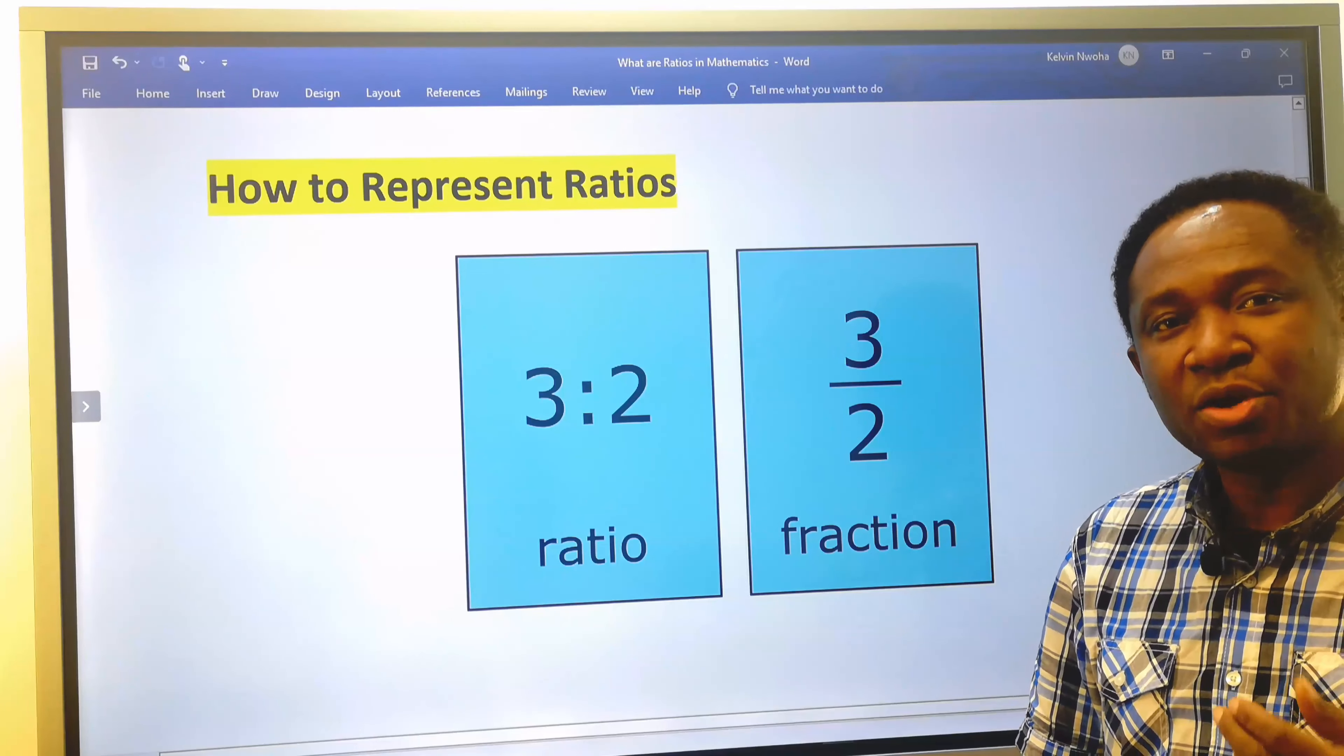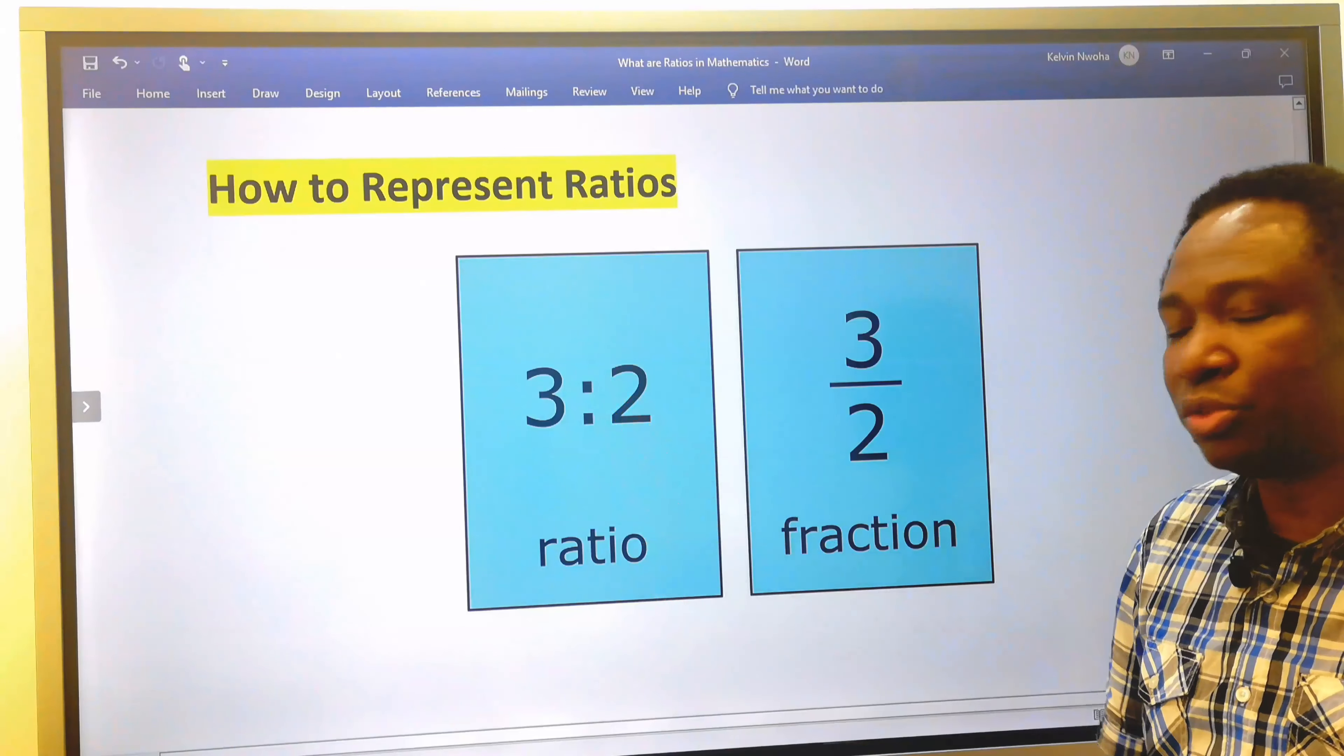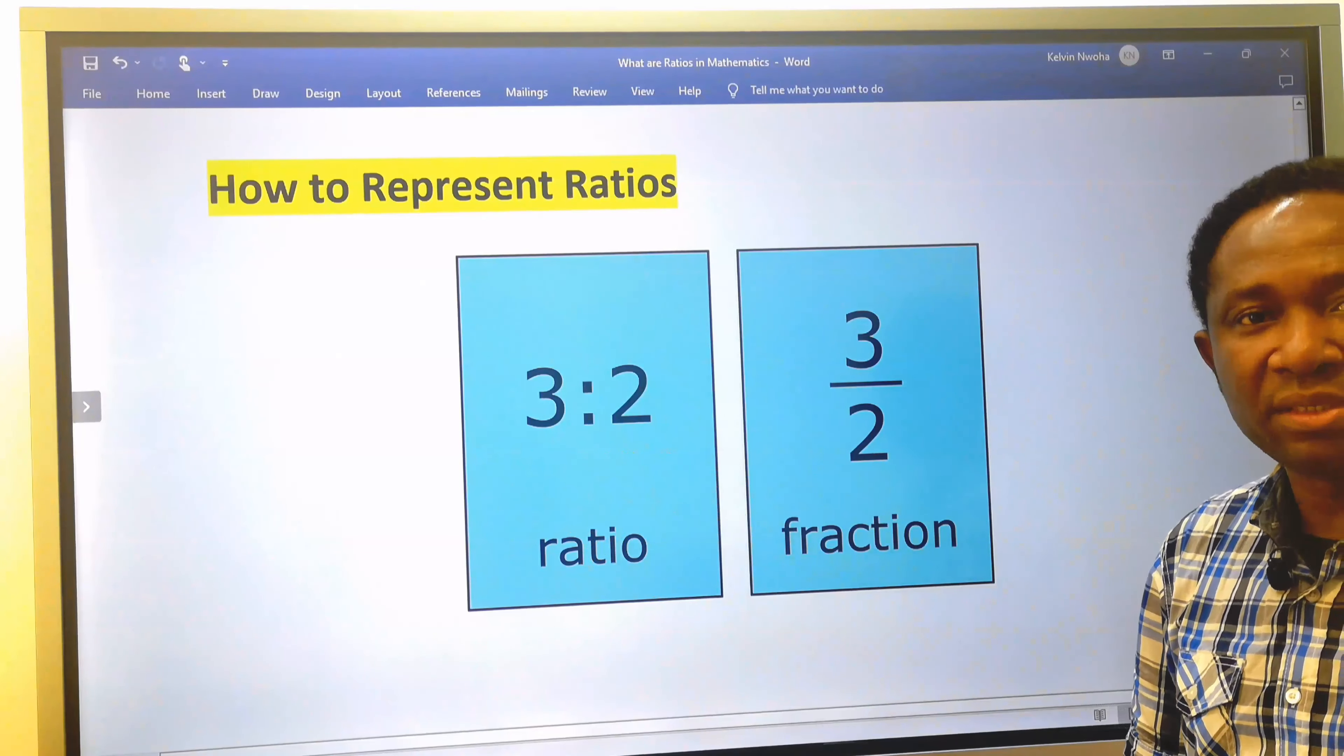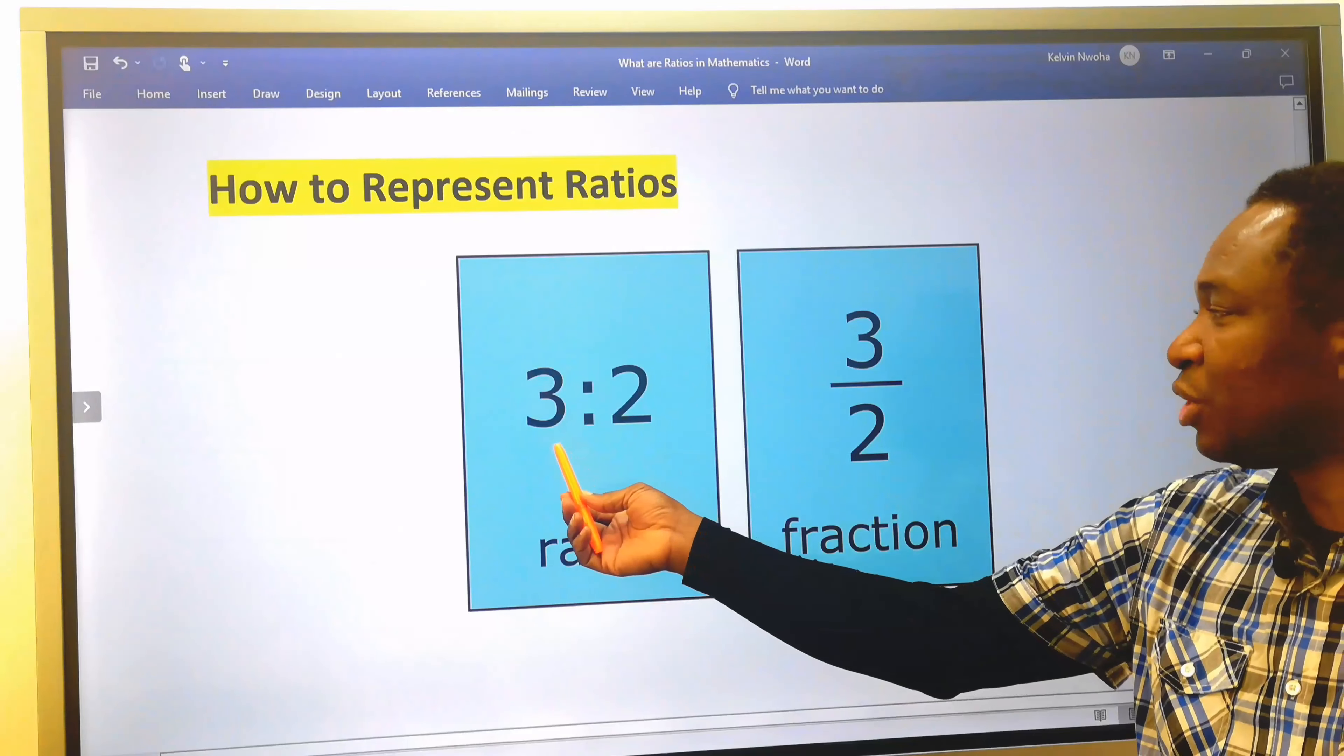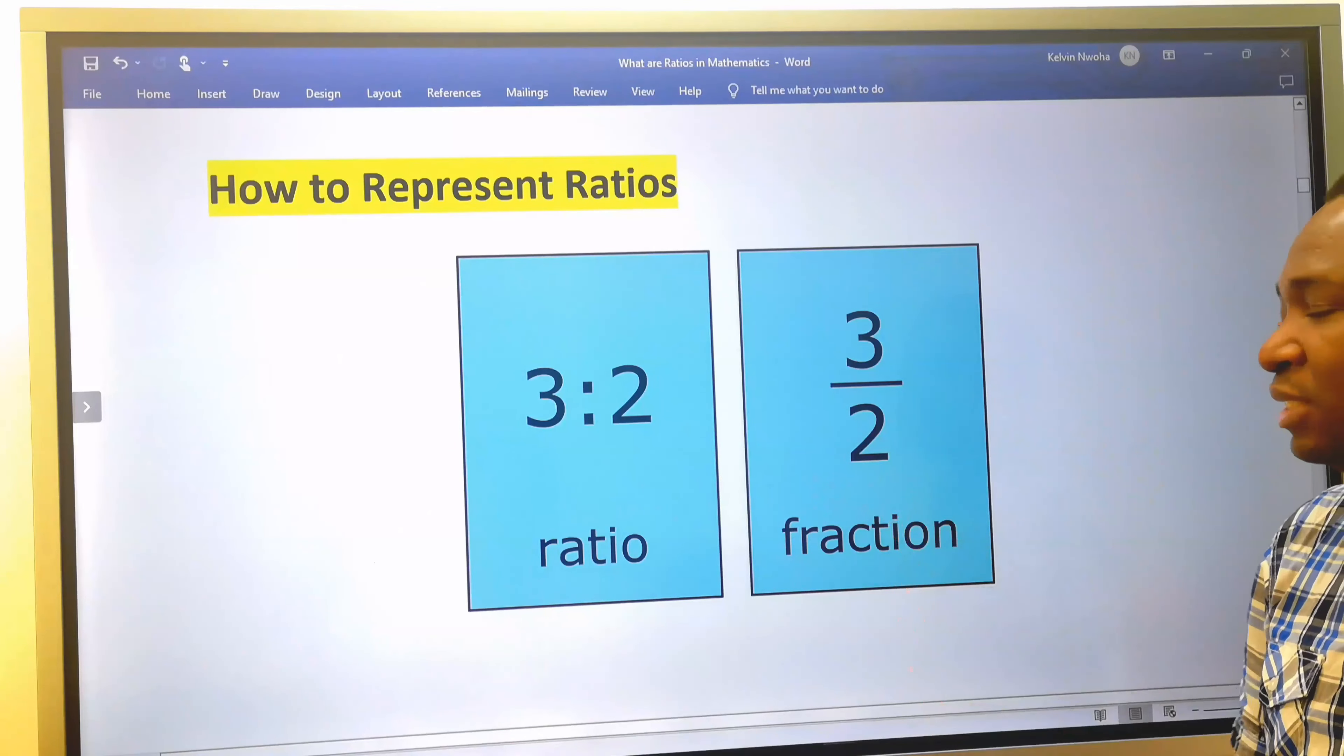How to represent ratios? By default, ratios can be represented with a double dot. The double dot must be separating the two comparing numbers. Also, ratios can be represented as a fraction, where the first ratio number will be at the numerator and the second ratio number after the double dot will be at the denominator.